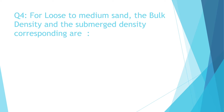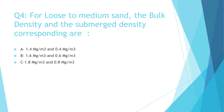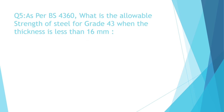Question 4: For loose to medium sand, the bulk density and submerged density are: a) 1.4 Mg/m³ and 0.4 Mg/m³, b) 1.6 and 0.6, c) 1.8 and 0.8, d) 2.0 and 1.0. The correct answer is b) 1.6 Mg/m³ and 0.6 Mg/m³.